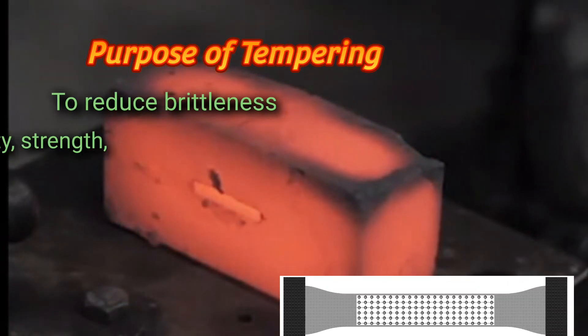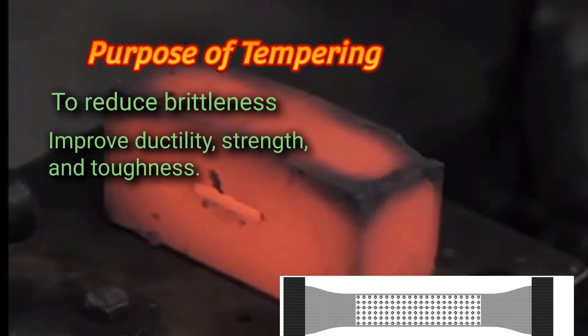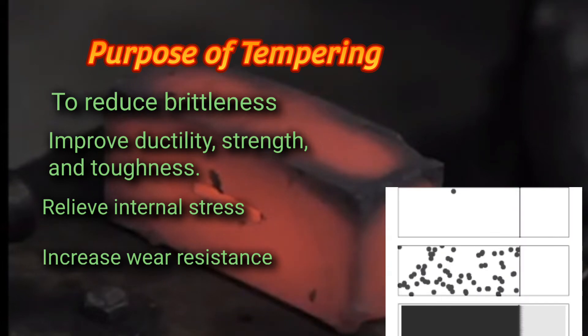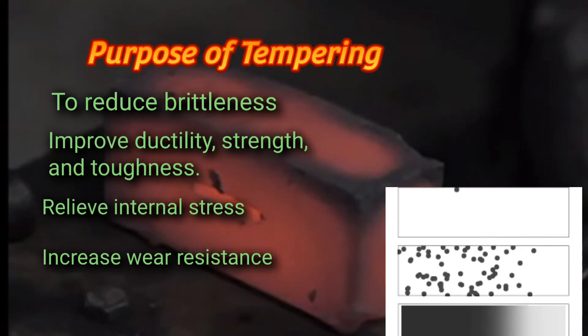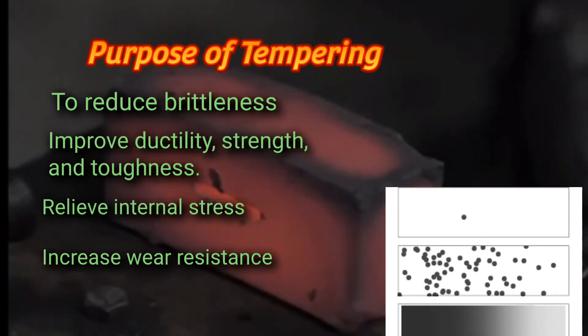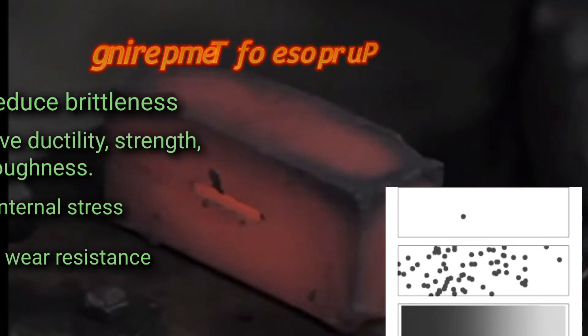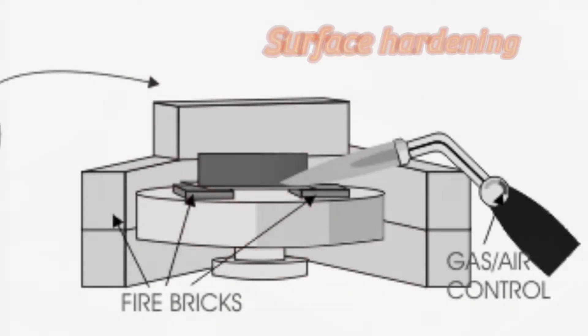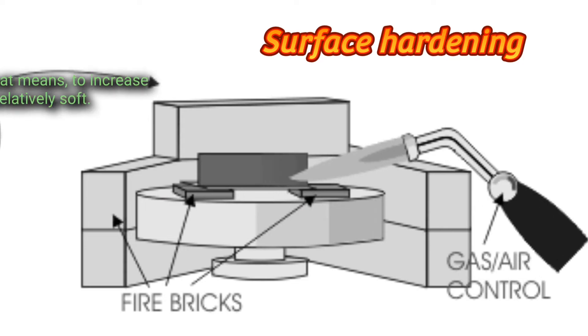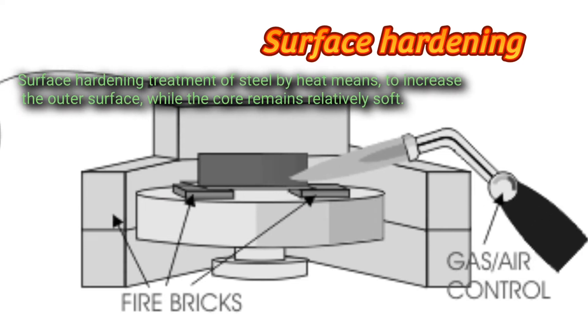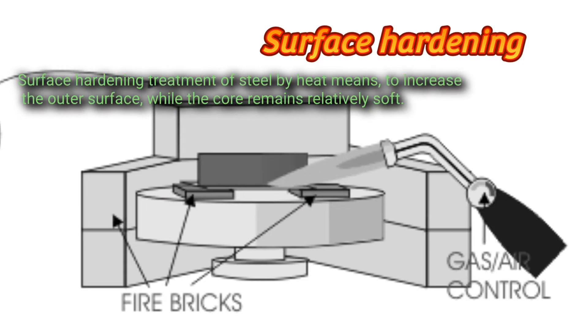The metal is removed from the bath and allowed to cool slowly in still air. Purpose of tempering: to reduce brittleness, improve ductility, strengthen toughness, relieve internal stress, and increase wear resistance.